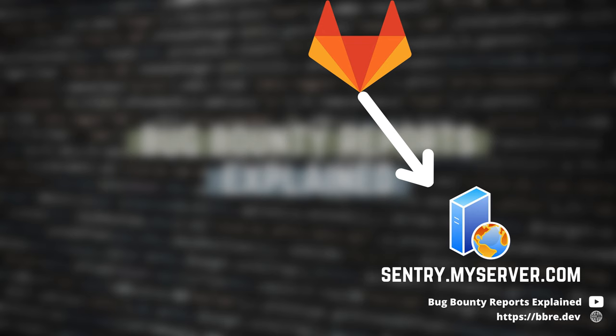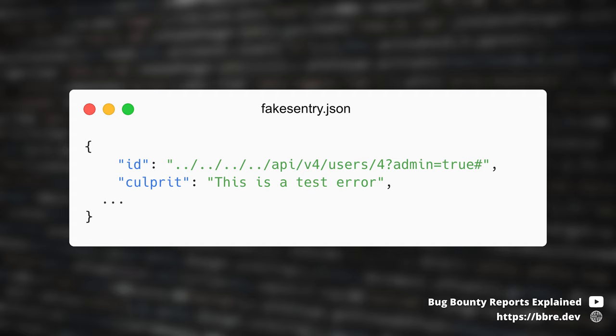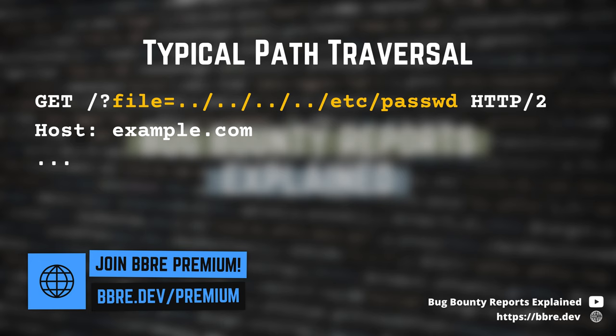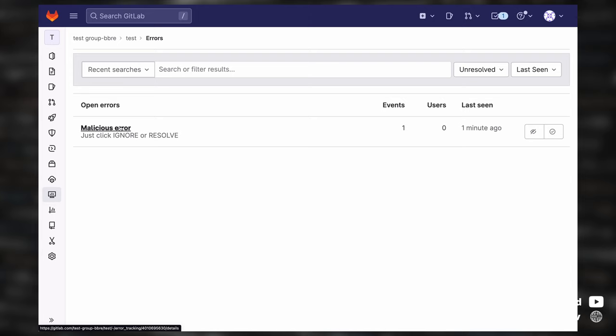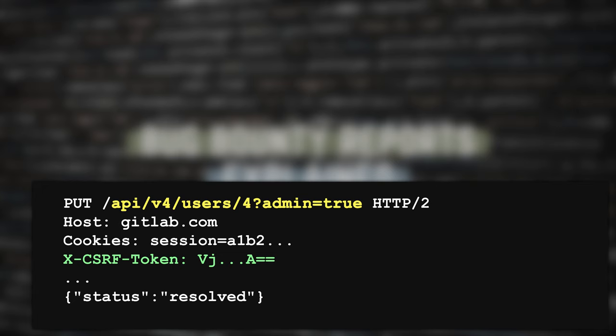You can also use a self-hosted instance of Sentry. What Johan did was create his own server that behaved like Sentry but returned errors with IDs that contained the dot-dot-slash sequence. You are probably familiar with the path traversal vulnerability, but today we are talking about client-side path traversal. These malicious errors appear on the list as legitimate ones, but when someone clicks the resolve button, the dot-dot-slash sequences are resolved and the path changes.